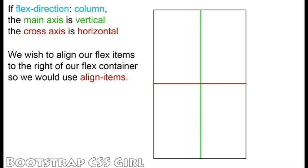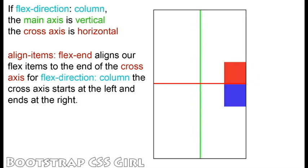Our FlexDirection is set to Column, and we would like to align our FlexItems to the right of our container, so we will use the AlignItems property. To align our FlexItems to the right, we set AlignItems to FlexEnd. This moves our FlexItems to the end of our cross-axis. With FlexDirection set to Column, the cross-axis starts at the left and ends at the right.